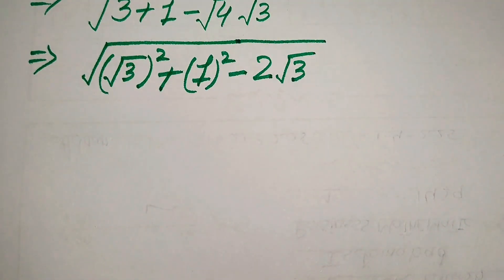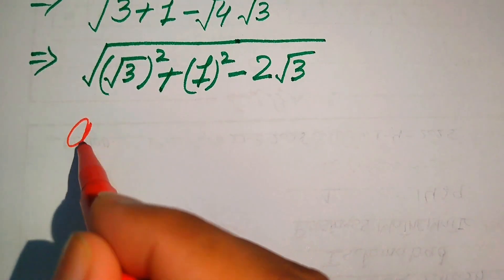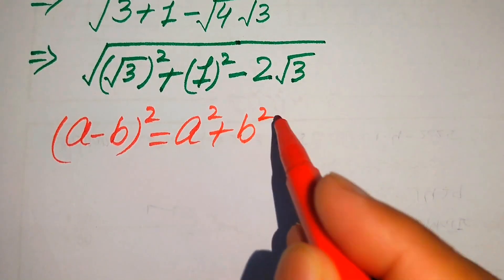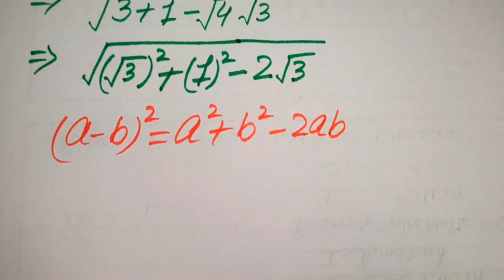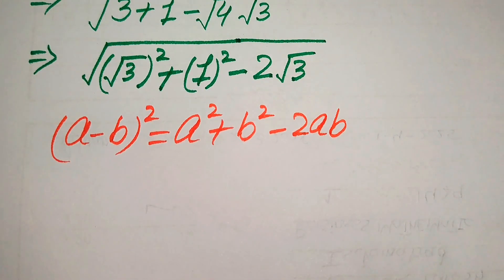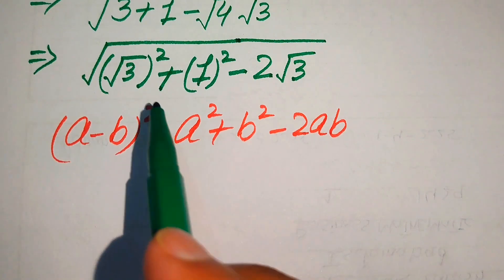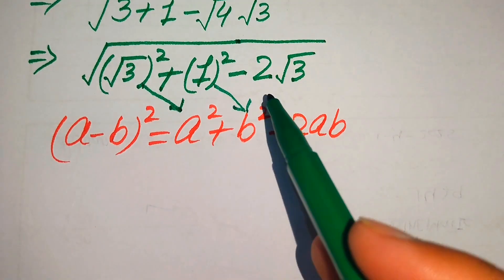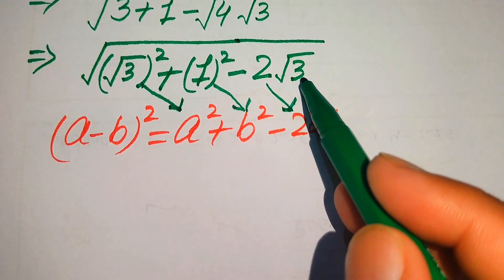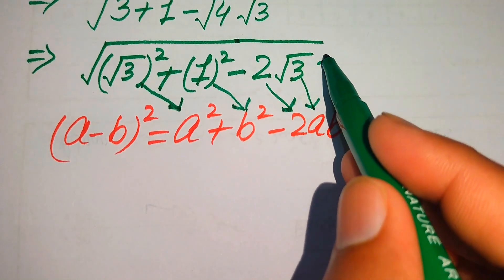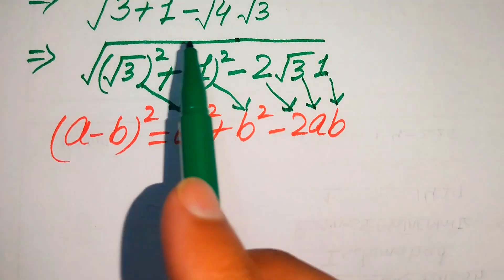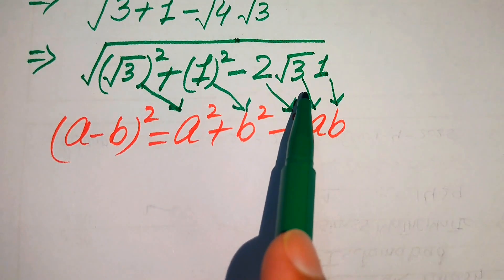In the next step we use the algebraic formula: (a − b)² = a² + b² − 2ab. Comparing the right-hand side of the equation, this term is a², this term is b², the 2 corresponds to the 2 in the formula, √3 is our a, and 1 is our b.